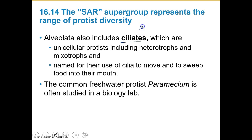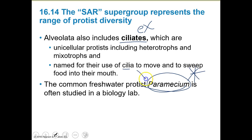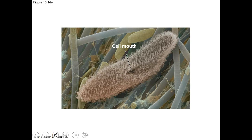Alveolata also include ciliates — unicellular protists including heterotrophs and mixotrophs that use cilia to sweep food into their mouths. A really good example is paramecium, one of the most studied organisms in biology. It uses its fine little hairs to shovel food in. It's a protist and part of the SAR group.